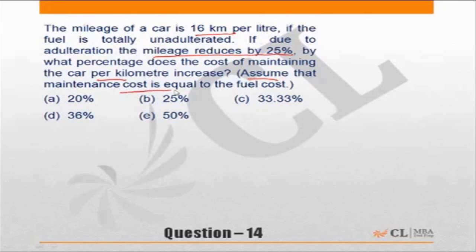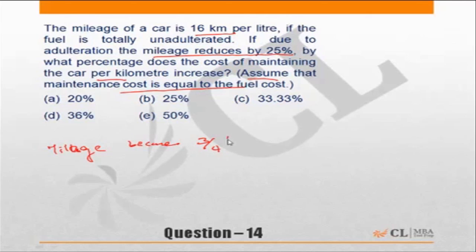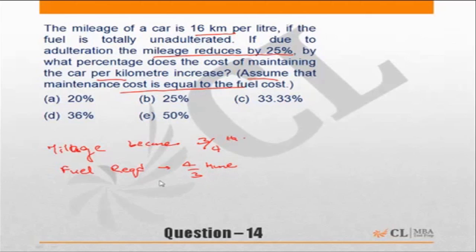Because of adulteration, mileage becomes three-fourths. If the mileage has become three-fourths times, the fuel required will become four-thirds times. So what you need now is four-thirds times the original amount of fuel.